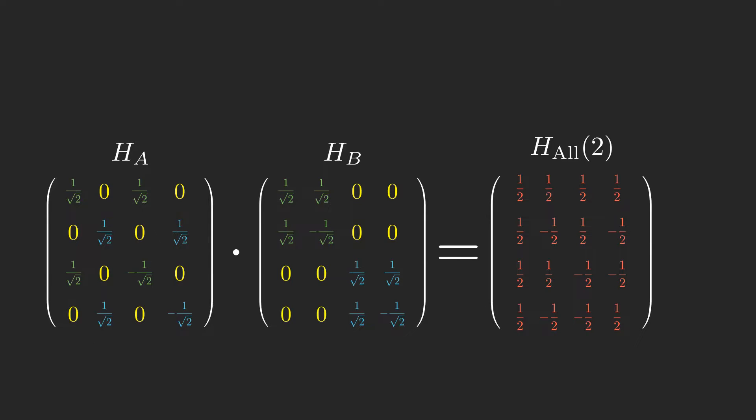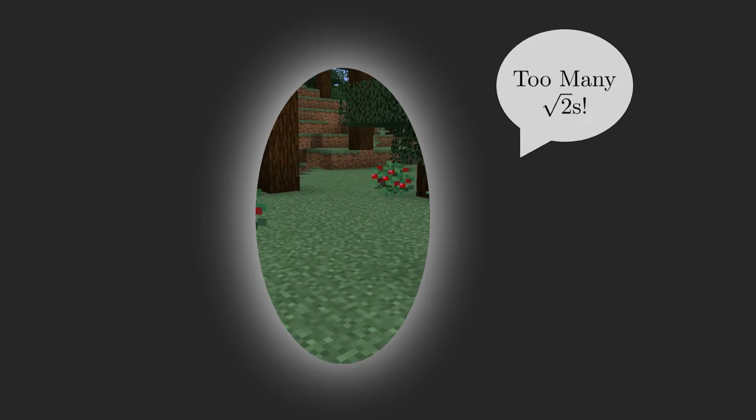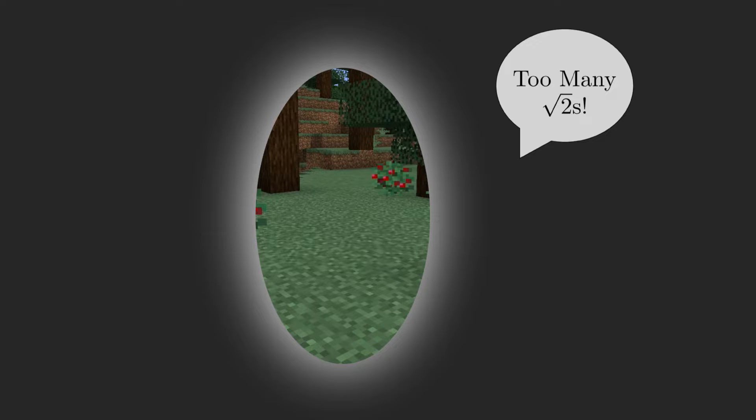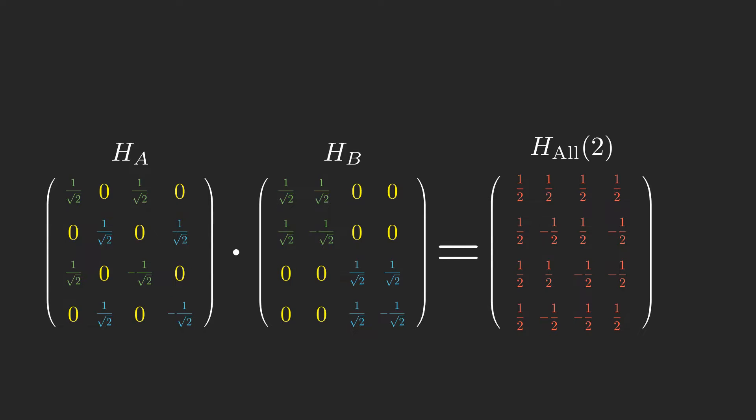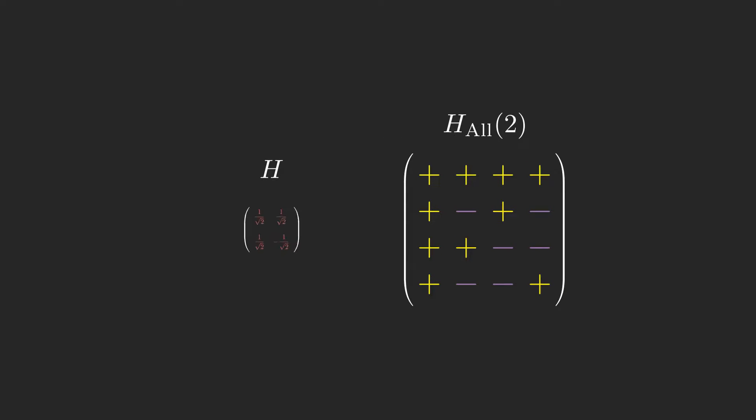We're going to be working with these matrices for a while, so for simplicity, now would be a good time to notice that the thing we really care about is the sign of each of the entries of the matrix. The actual values all have equal magnitude, which is just some power of 1 over square root 2. So let's use a shorthand and replace positive entries with a plus symbol and negative entries with a minus symbol. From this point forward, we can pretend that all pluses are equal to each other, and all minuses are equal to each other. I promise the math all still works out. There are just some hidden constants being swept under the rug. Notice that with this new notation, H all of 2 can be broken up into 4 blocks, where each smaller block is a Hadamard matrix for one qubit.